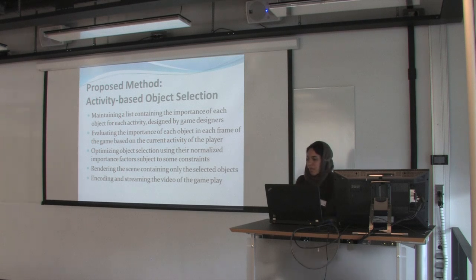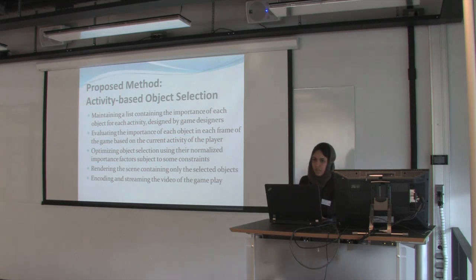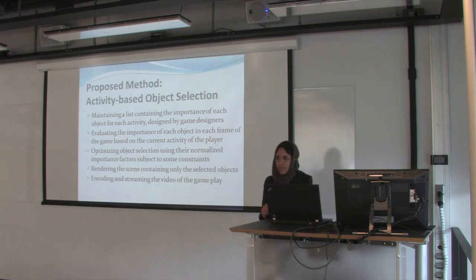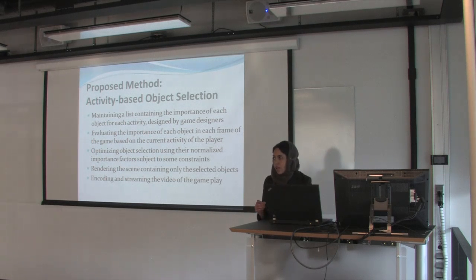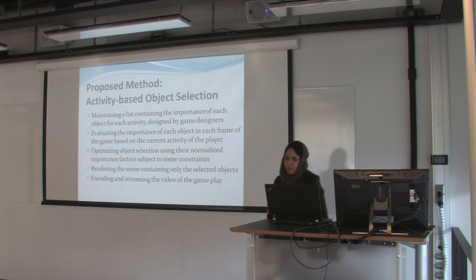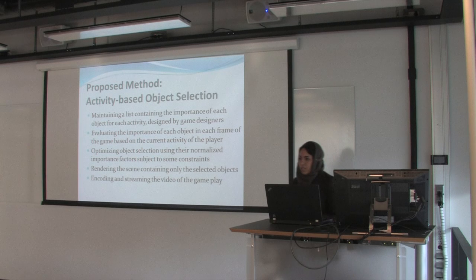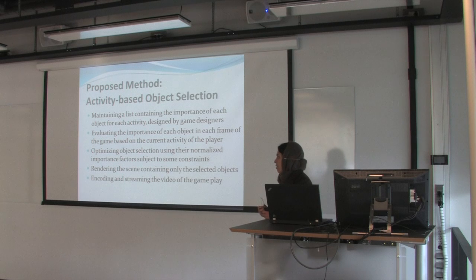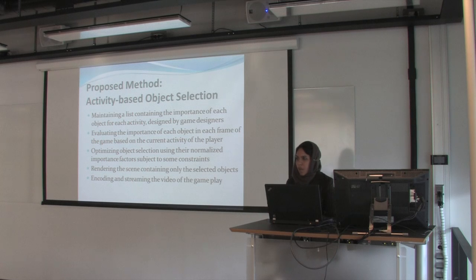The proposed method is an activity-based object selection method. First, we maintain a list of objects in the game — this list can be produced by game designers, who are completely aware of the game context and know which objects are available in each part. After that, we evaluate the importance of each object according to the current activity of the player at each scene. Then we select the most important objects, omit the less important ones completely, and only the remaining important objects are coded and streamed to the game player.